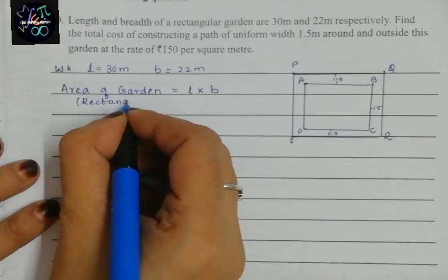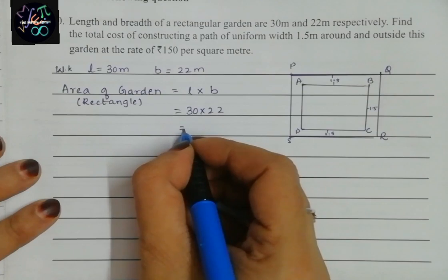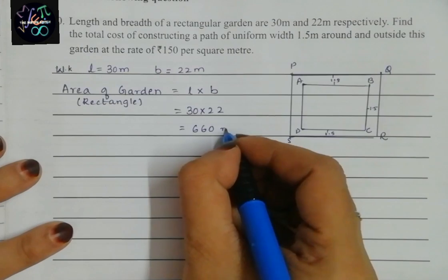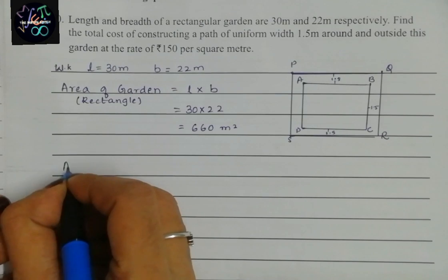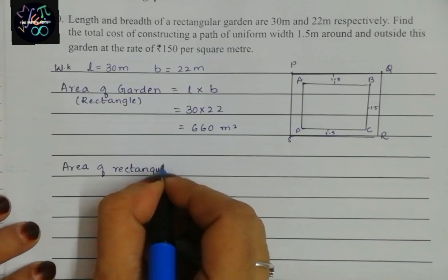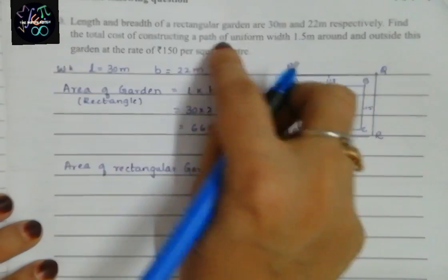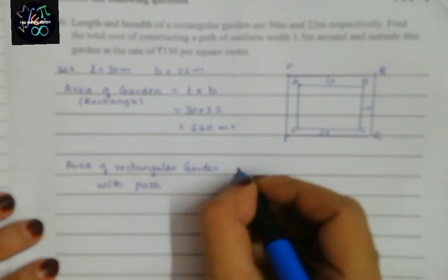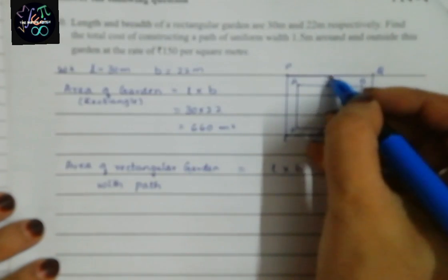Area of garden = length × breadth = 30 × 22 = 660 square meters. This is the area of the rectangular garden. Now for the area of the rectangular garden with path — they have told to construct a path, so we include the 1.5 meter path on all sides.